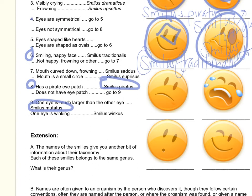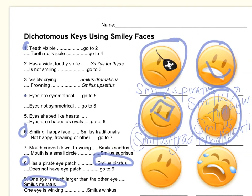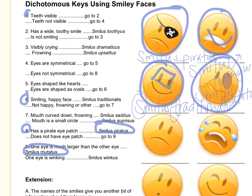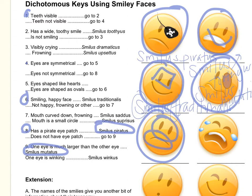Remember you can always stop this and go back in case you don't understand what I'm doing. Teeth visible — we're doing this guy right here. Teeth visible? No. Teeth not visible — go to four. Eyes are symmetrical? Yes. Eyes are shaped like hearts? No. Eyes are shaped like ovals — go to six. Smiling happy face? No. Not happy, frowning or other — go to seven. Mouth is curved down and frowning? Yes. So that makes him Smilus sadus.